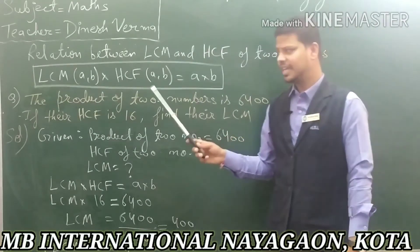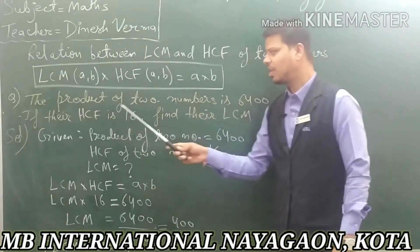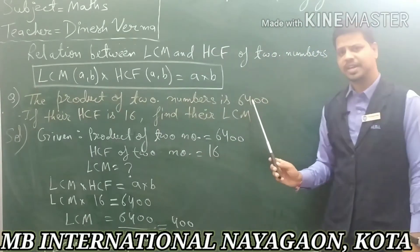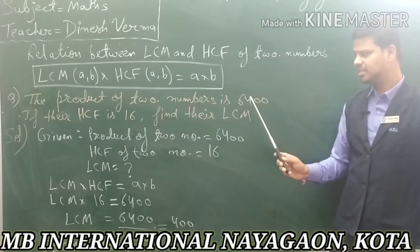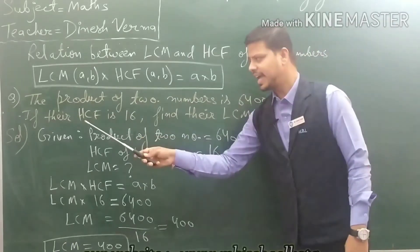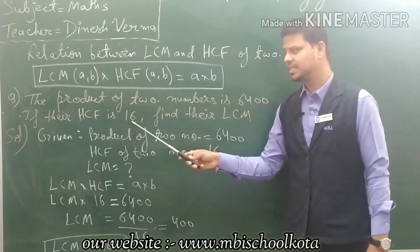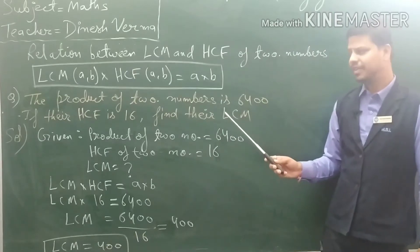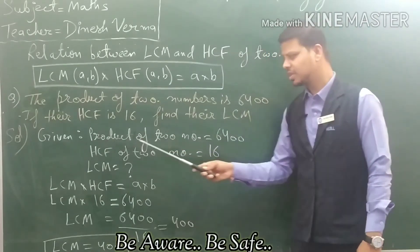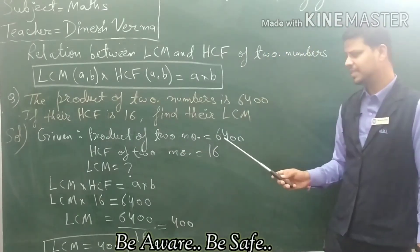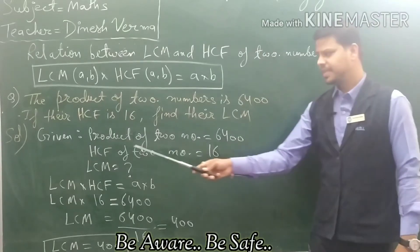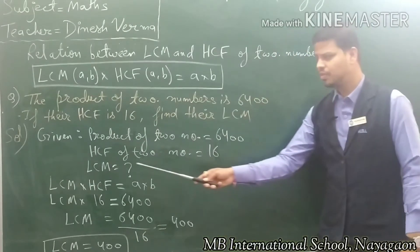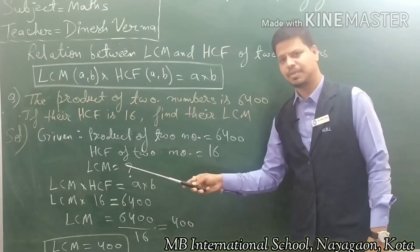Now we will take an example. The product of 2 numbers is given as 6400. Their HCF is given as 16. You have to find the LCM of these 2 numbers.